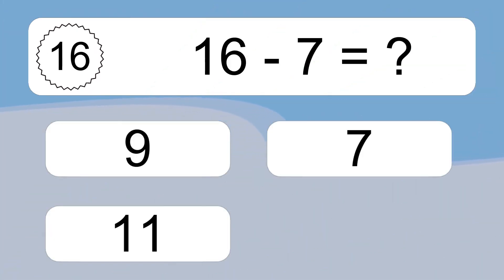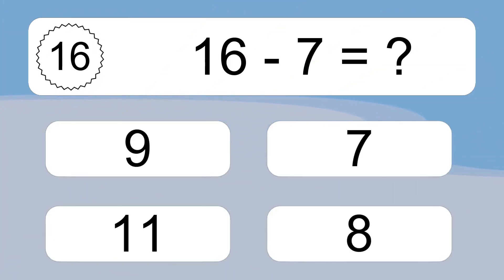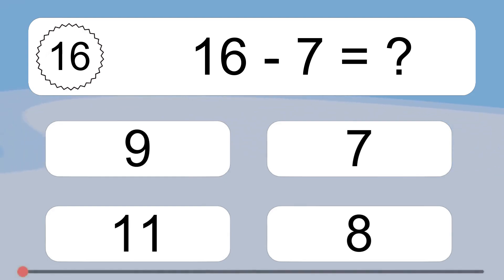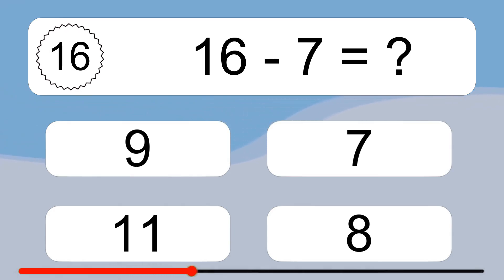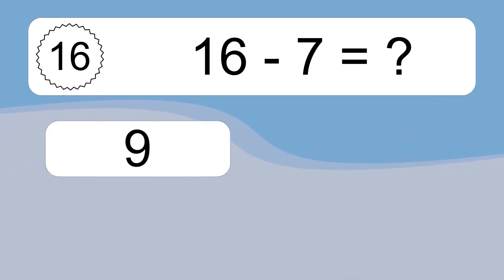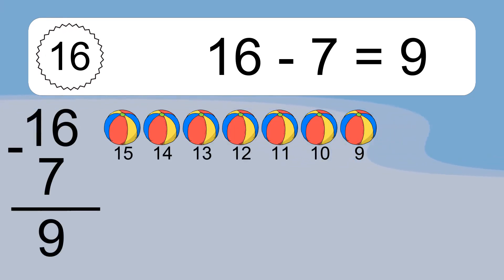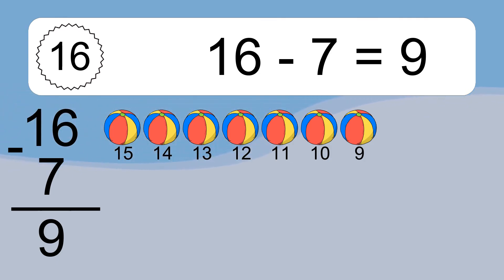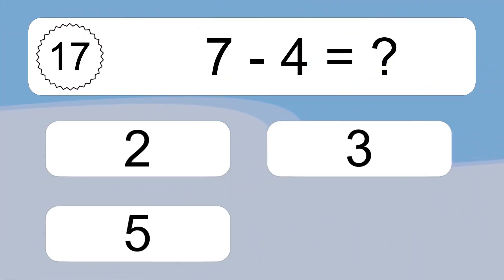16 minus 7 equals what? 16 minus 7 equals 9. Let's count it. 15, 14, 13, 12, 11, 10, 9.